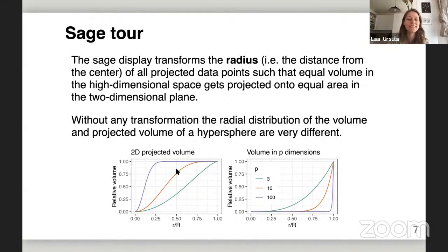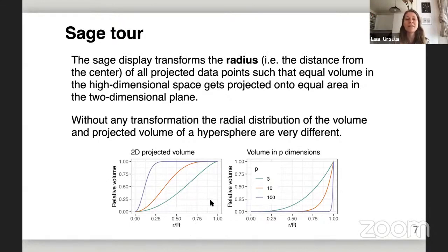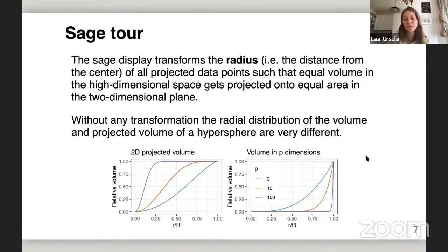The opposite thing happens once we're projecting from this high-dimensional space. Looking at where volume gets projected onto in the plane — parameterized by the fraction of the radius in the plane — the projected volume gets pushed towards the center. With p equals 100, most of the volume is projected in the first quarter in terms of radius. The idea with the SAGE display is to correct for this difference, ensuring that equal volume in the high-dimensional space gets projected onto equal area in the two-dimensional plane. This is done with a radial transformation that depends on p, the number of dimensions.